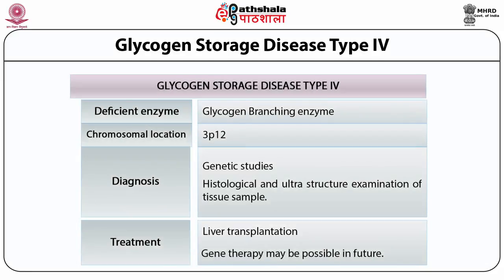Glycogen storage disease type 4 is also known as Anderson disease, brancher deficiency, amylopectinosis, or glycogen branching enzyme deficiency. It is an autosomal recessive disorder occurring due to deficiency of the branching enzyme, also known as amylo-1,4 to 2,1,6 transglycosylase. This enzyme breaks alpha-1,4 bonds and transfers a 7-unit segment of alpha-1,4 residues from a glycogen chain to the C6-hydroxyl group of a glucose residue, creating a branch point.